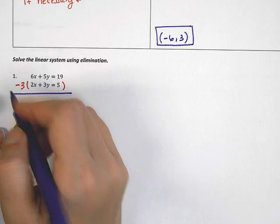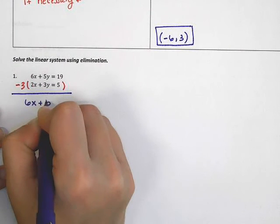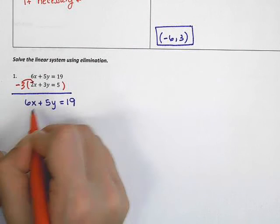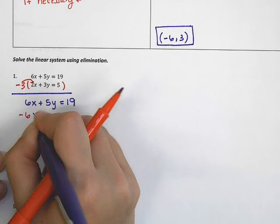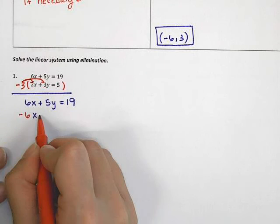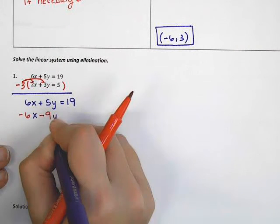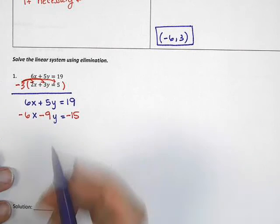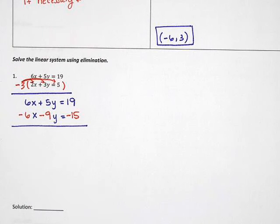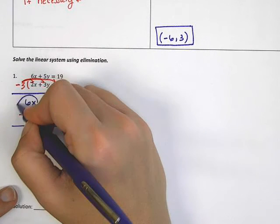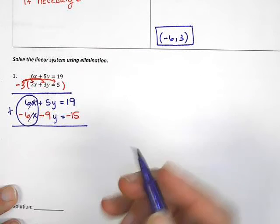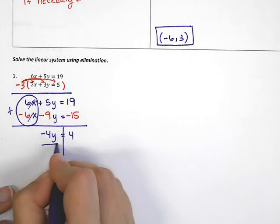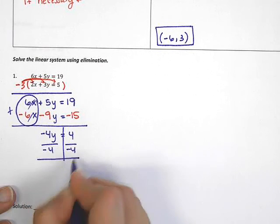The first equation doesn't change: 6x plus 5y equals 19. For the second equation, negative 3 times 2 is negative 6x, negative 3 times 3 is negative 9y, and negative 3 times 5 is negative 15. The 6x and the negative 6x will cancel — so this worked. That gives me 5y minus 9y equals negative 4y, and 19 minus 15 equals 4. So negative 4y equals 4. Dividing both sides by negative 4 gives me y equals negative 1.